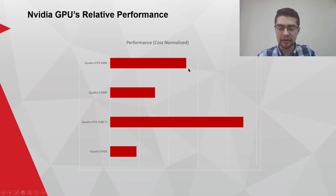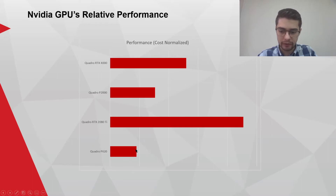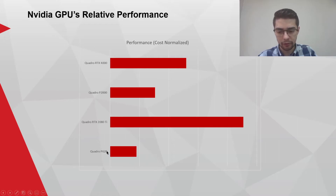Here I've taken the performance data from the previous chart and normalized it based on cost. So you can see how much performance you're getting per Rand — the P620 definitely wins out.